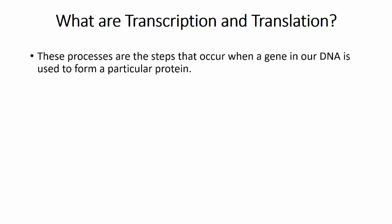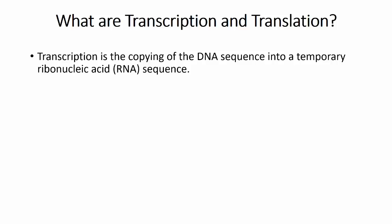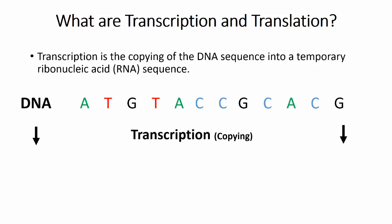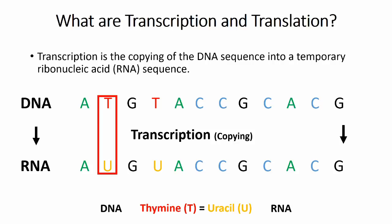These processes are the stages that a DNA gene goes through to produce a protein. Transcription involves copying the DNA sequence into a closely related RNA sequence. This molecule is a single strand of nucleic acid that has a short lifespan, a slightly modified backbone structure, and a base called uracil instead of thymine. The base sequence ends up the same, and the process can be likened to making a photocopy or copying from a textbook.